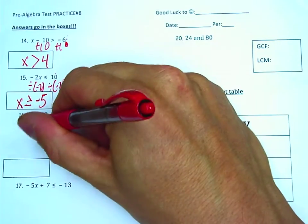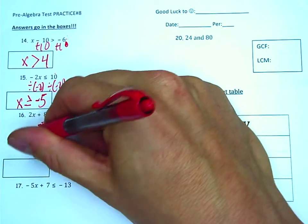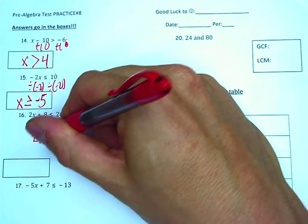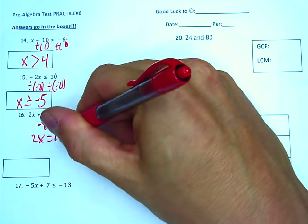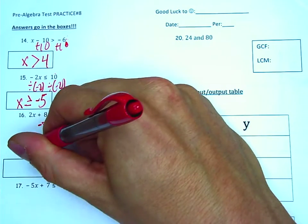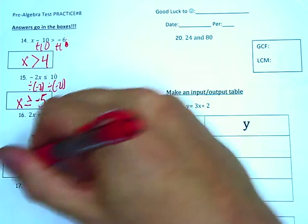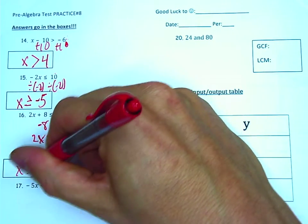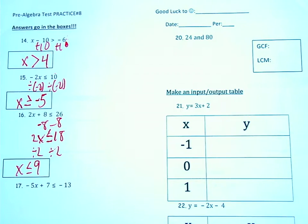Question 16. We're going to subtract 8 from 26. That's going to yield 18. And then we're going to divide 2 into 18. That's going to yield a 9. Again, we're dividing by positive 2 there. That will be a positive 9 in value.